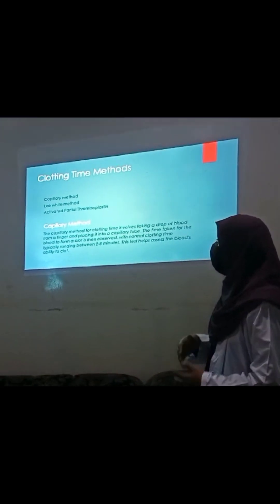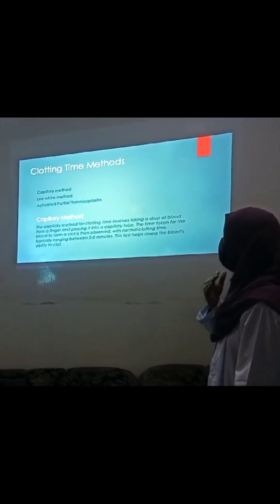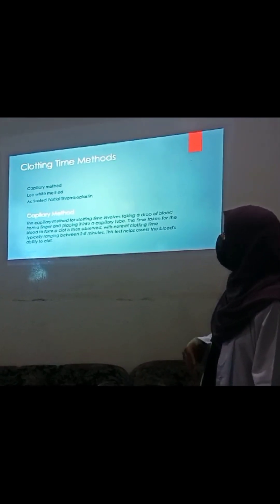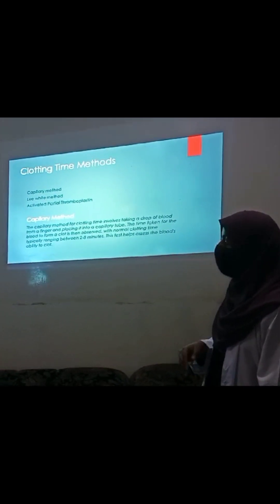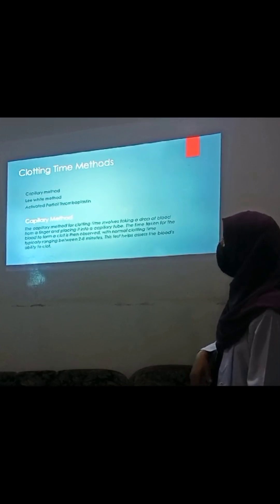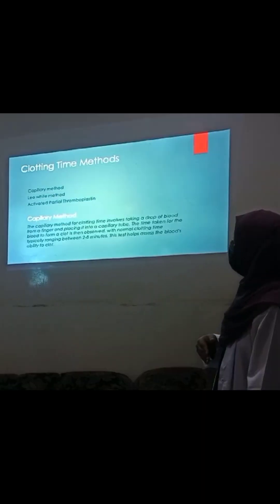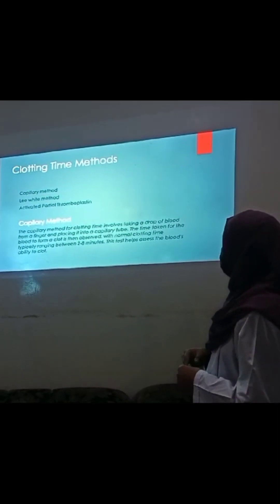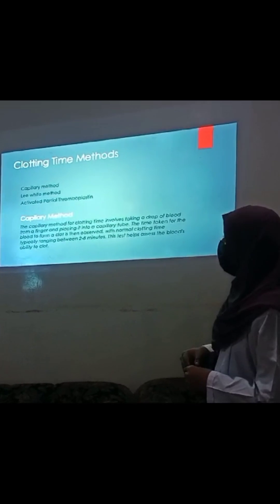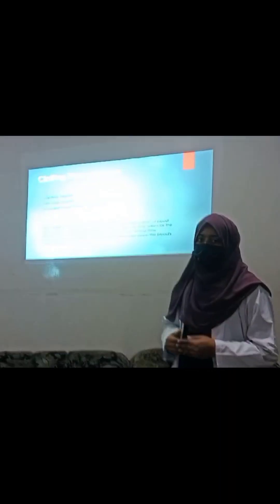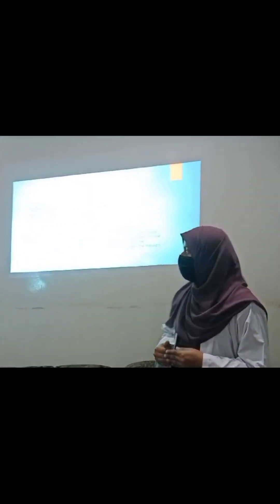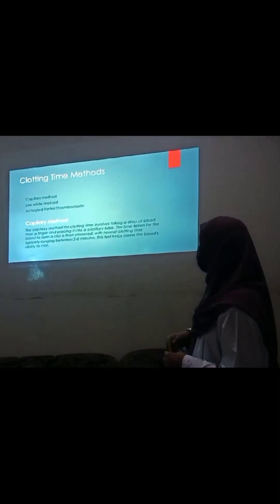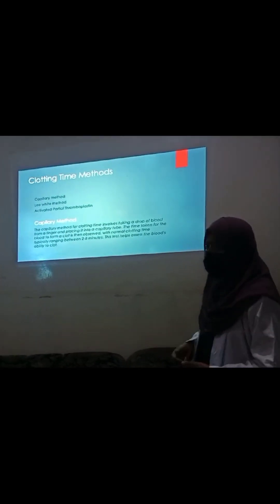The Capillary method is used for clotting time by taking a drop of blood from a finger and placing it into a capillary tube. The time taken for blood to form a clot is then observed and compared with normal clotting time. Typically, its normal range is between 2 to 8 minutes. This test helps assess the blood's ability to clot.